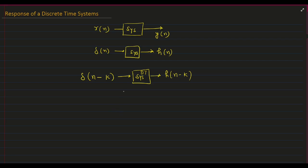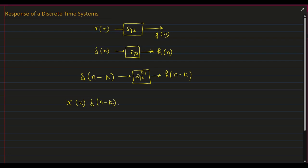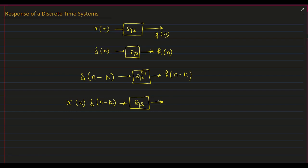And if I multiply the input by X of K, then because it is a linear time invariant system, multiplying — meaning scaling of input — will also result in scaling of the output.